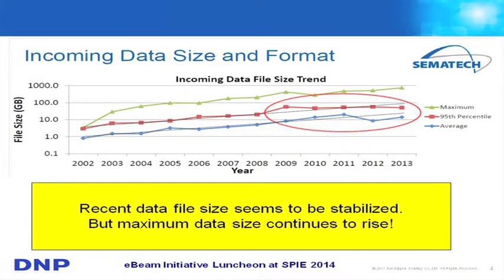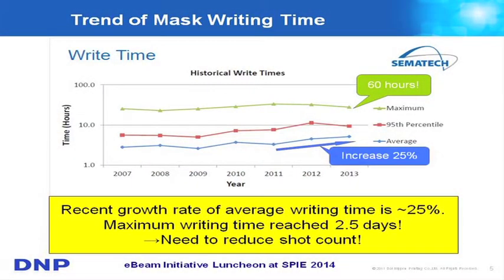The recent data file size seems to be very stabilized on average, but the maximum data size of the masks continues to increase. These kinds of things will increase the writing time. The average writing time over the past 2-3 years is increasing 25 percent per year, and the maximum writing time has already reached above 50 hours. Some very critical layers need 2.5 days to write just one mask.